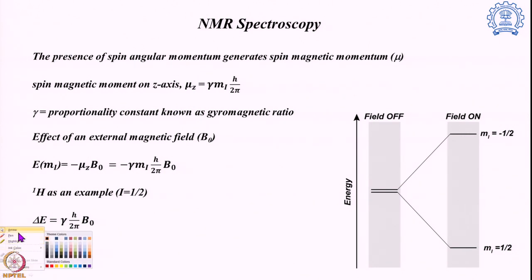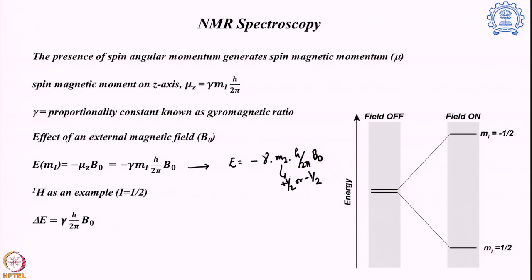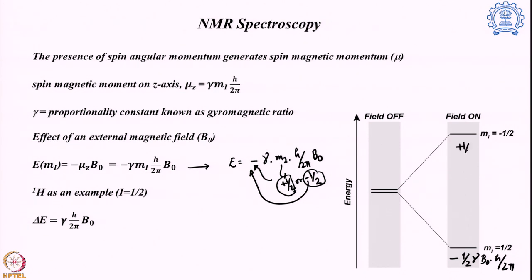Why is +1/2 lower in energy? The energy is given by −γ · m_i · (h/2π) · B0. For m_i = +1/2, due to the minus sign, the energy is −(1/2) · γ · B0 · (h/2π), which is lower. For m_i = −1/2, the two minus signs combine to give a higher energy state of +(1/2) · γ · B0 · (h/2π). The energy difference between the two states is therefore γ · B0 · (h/2π).